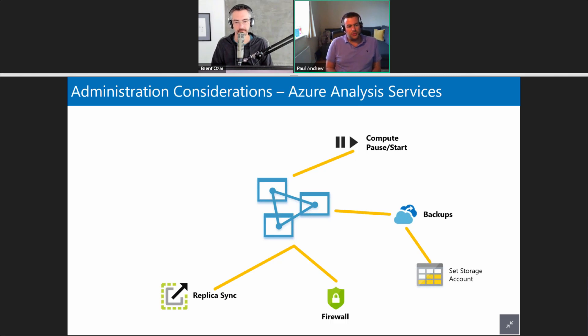Like SQL databases, this Analysis Services product has its own firewall. We'll need to whitelist some external IP addresses to access it — and if memory serves, it's turned off by default, so you may want to turn that on. Replicas are a good one too — something very painful to configure on-premises, but now fairly easily available in Azure as read-only replicas.